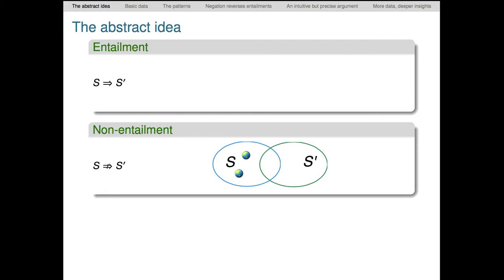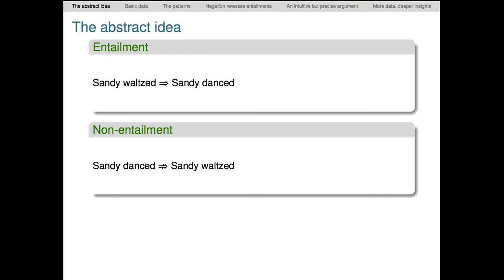This is a pretty weak notion. We expect most sentence pairs to be in the non-entailment relation. Here's an example, the reverse of the entailment case we looked at before. Here we have a failure of entailment because there are worlds in which Sandy danced, but the dance was a tango rather than a waltz. Just one such hypothetical situation is enough to mean that we don't have entailment.